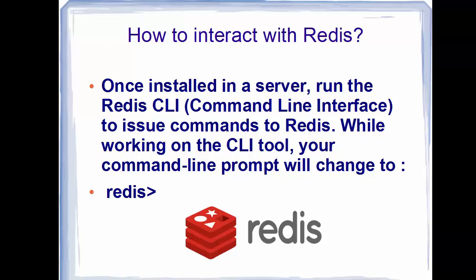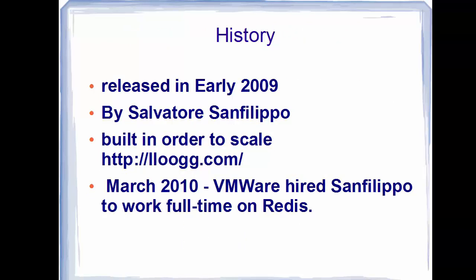Redis can be installed on a server and interacted with via a command line interface called Redis CLI. Using this Redis CLI we can interact with our Redis server. This Redis client can be used on any machine, and when we open it the prompt will appear as 'redis' followed by an angle bracket. We will see in the coming videos how to install Redis and how to use it.